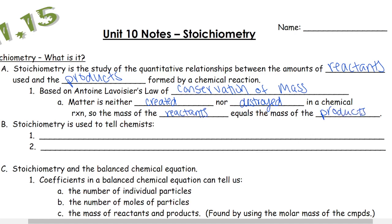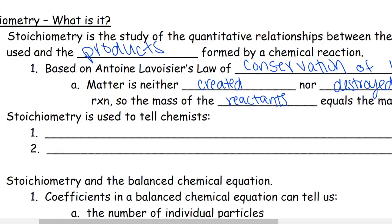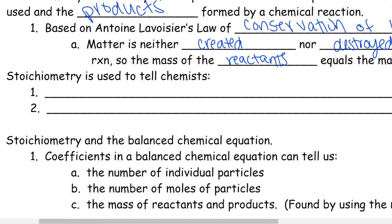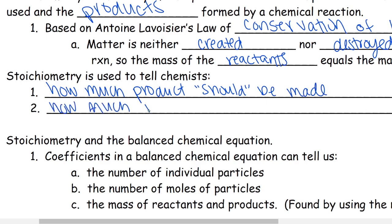We use stoichiometry to tell us how much of a specific product should be formed or how much of a specific reactant will be used up. We can relate those things to one another and all of this is centered around your balanced chemical equation. Stoichiometry is used to tell chemists how much product should be made or how much reactant is used up.